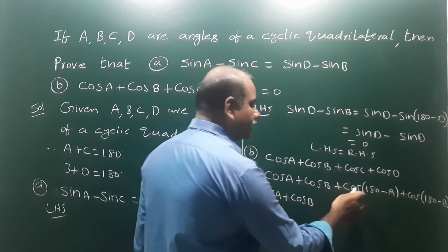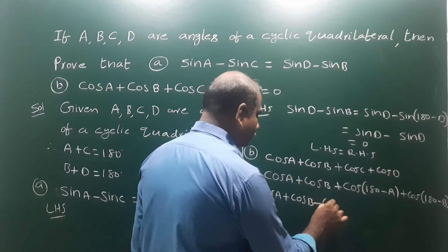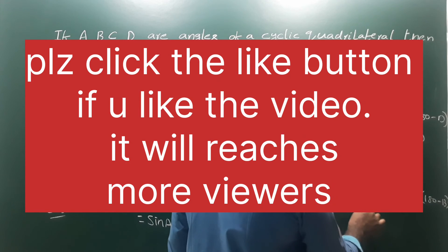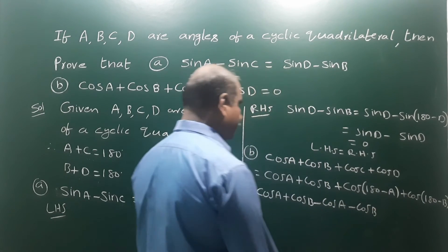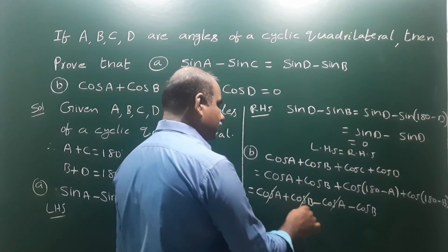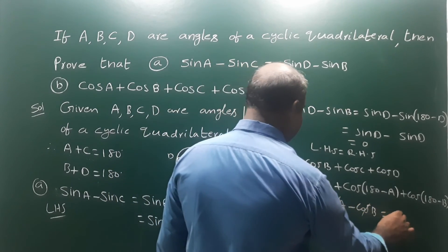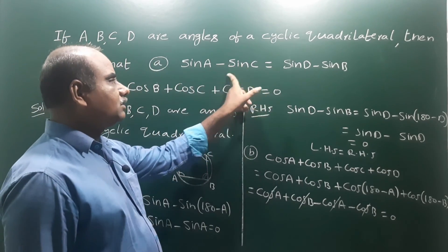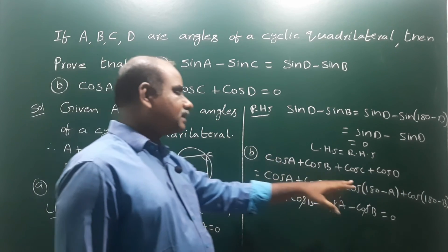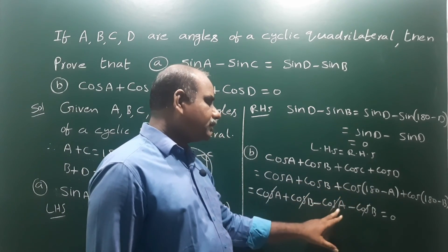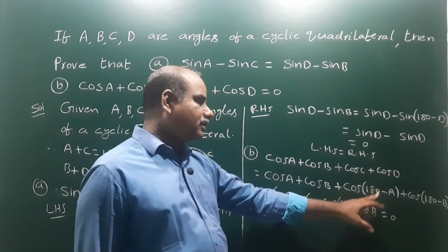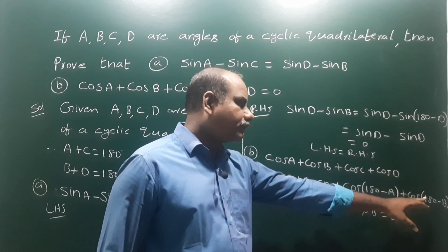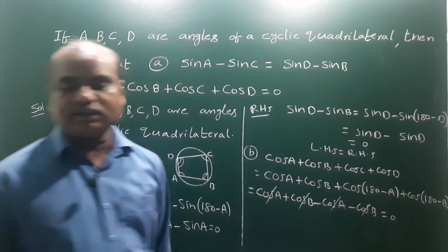Since cos(180 minus A) equals minus cos A, and cos(180 minus B) equals minus cos B — because in the second quadrant cosine is negative — we get cos A plus cos B minus cos A minus cos B, which equals zero. Therefore the second result is also proved.